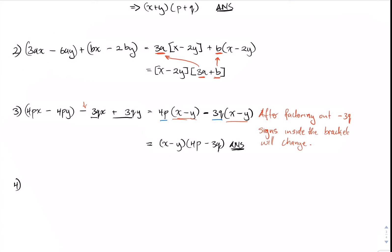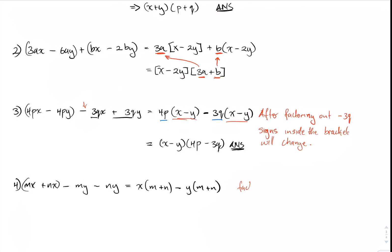Example four: mx plus nx minus my minus ny. In the first two terms, x is common, so factoring out x gives us x times m plus n. In the second two terms, factoring out negative y gives us negative y times m plus n. Looking at that expression, m plus n is common, so factoring it out gives us m plus n times x minus y.